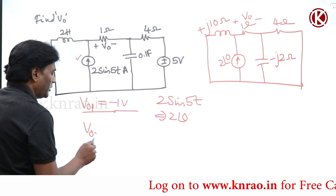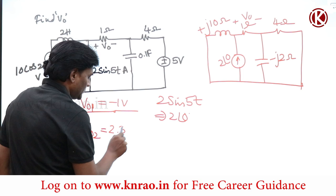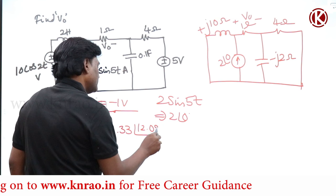V02: in these problems you can make a mistake, I will point that out. The result is 2.498, and V02 = 2.33 at an angle of 12.09°.